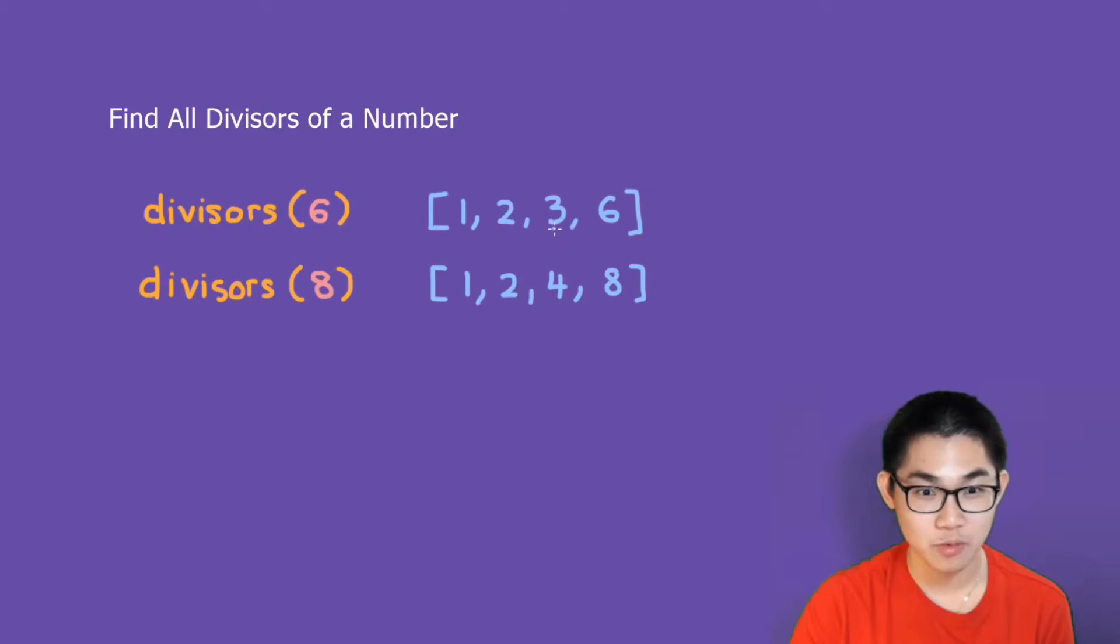For example, like 6 divided by 3 is 2, the remainder is 0. And so the same thing for down here. If we want to find the divisors of 8, then the result would be 1, 2, 4, and 8.